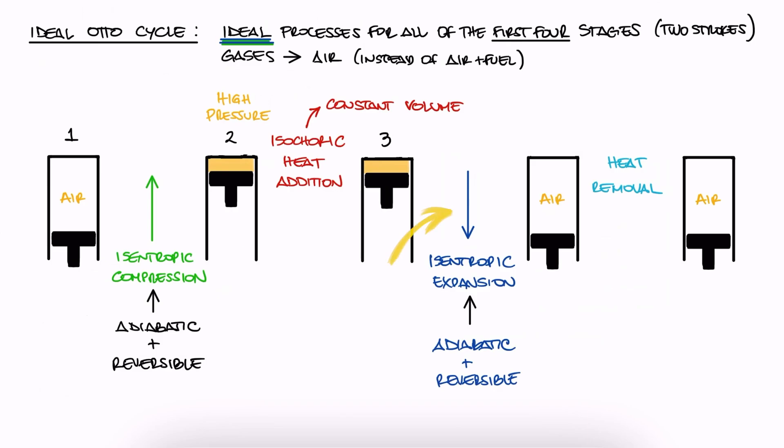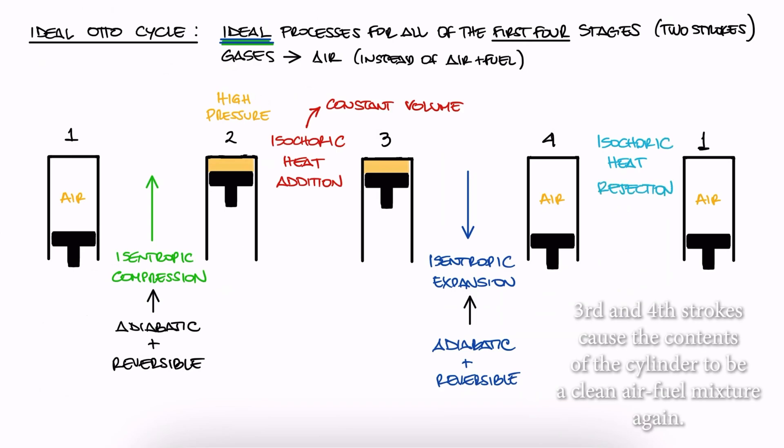And finally, between stroke 2 and what would be stroke 3, when the exhaust valve opens and the higher pressure makes the combustion products rush out, we describe it to be an isochoric heat rejection process. This would bring our air back to state 1.